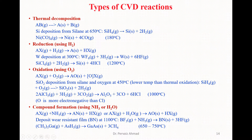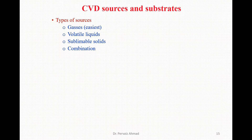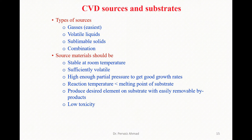Regarding CVD sources and substrates used during thin film growth: the types of sources we have include gases — the most easily accessible form of resources — as well as volatile liquids, sublimable solids, and combinations of different products. Source materials should have certain characteristics: they should be stable at room temperature, sufficiently volatile with high enough partial pressure to get a good growth rate, and the reaction temperature should be smaller than the melting point of the substrate.